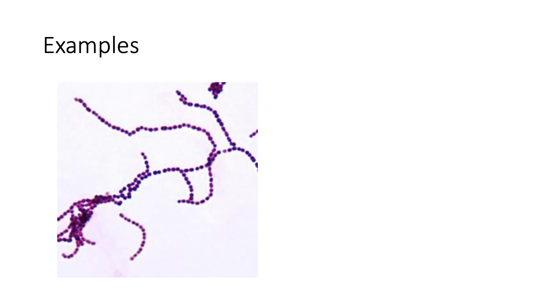Now let's take a look at some examples. In this first figure, how would you report this? You can pause here while you figure it out. If you answered gram-positive cocci in chains, you would be correct.